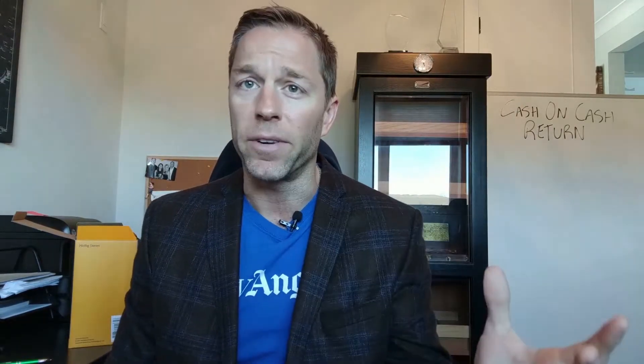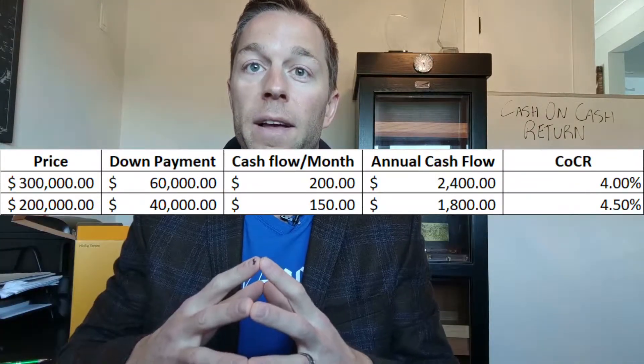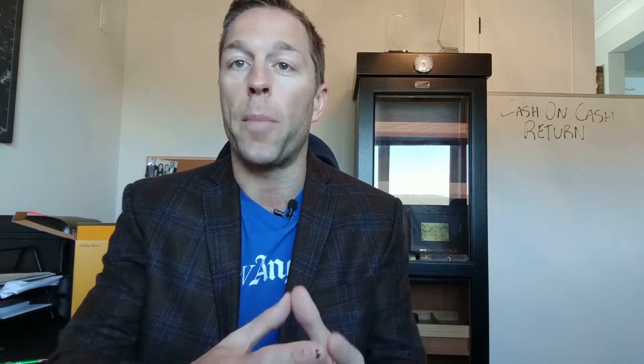For instance, I get asked all the time: what is a good cash flow on a property? Many, including myself at one point, thought $100 per door is great. However, let's say you're looking at two duplexes — one priced at $300,000 that you project would cash flow $100 per door, and the other priced at $200,000 that projects a monthly cash flow of $75 per door. If you're thinking in terms of monthly cash flow amount, you'd automatically think the $300,000 property is better.